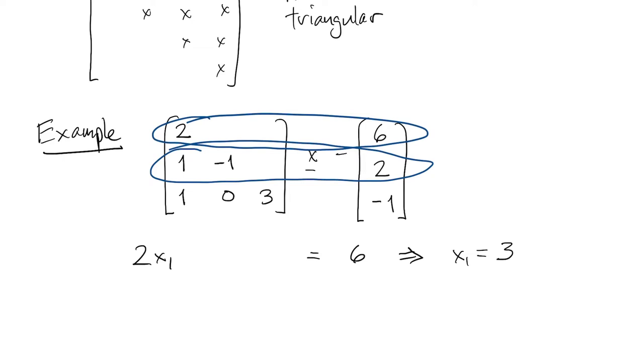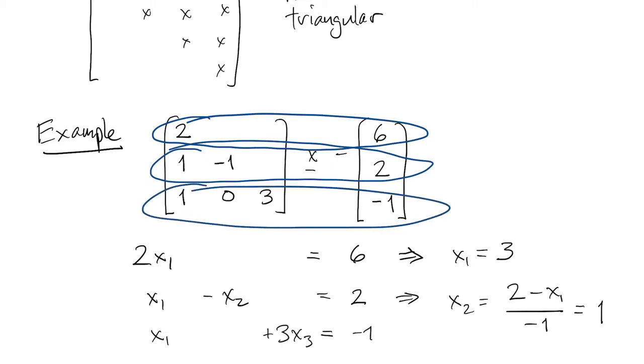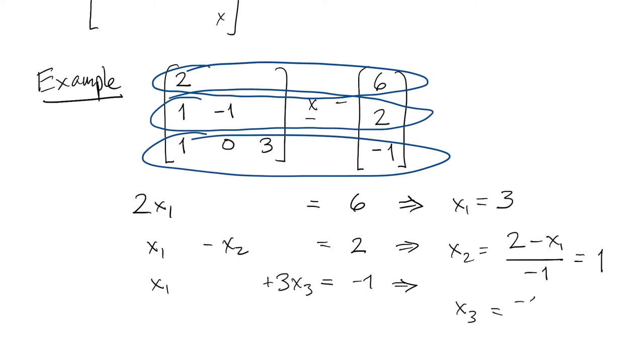Then when we look to the second row, well it involves only x1 and x2, but we just found x1. So now we can consider it known, and we can solve for x2. Then we go to the next row, and only the first three variables are used, and since we've already found the first two, that lets us solve for the third, and so on. You see how this could continue down to any size.